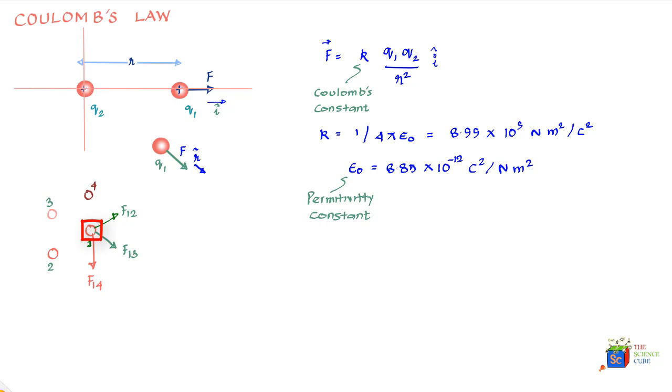Then the net force on this particle one is nothing but the vector sum of this force, this force, and this force. If there are n number of forces acting on a charged particle, particle one, then the net force acting on this particle is equal to the vector sum of force on one due to particle two, plus force on particle one due to particle three, plus force on particle one due to particle four, and so on till you reach the nth particle.